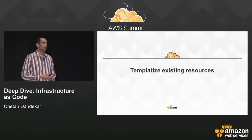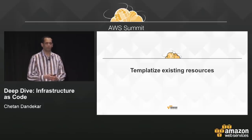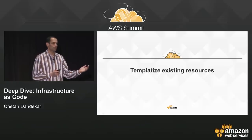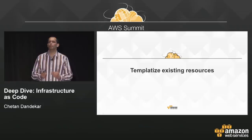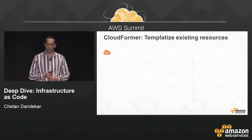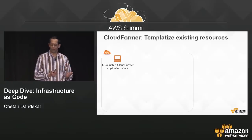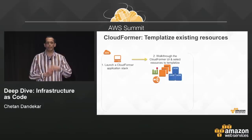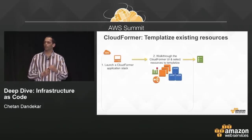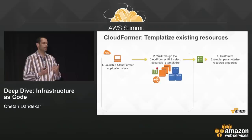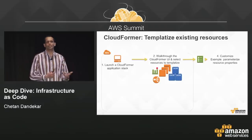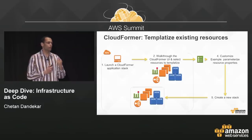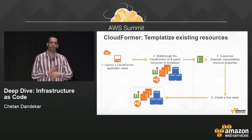If you're new to CloudFormation and already using AWS through the console or CLI, you don't have to start from a blank slate. You can templatize your existing resources using a tool called CloudFormer. It's a beta tool you stand up as a web application in your account; it walks you through your existing resources, you select what you want to templatize, and it outputs a base template. You'll need to do some post-processing — for example, parameterizing the AMI ID — and then you can replicate that existing architecture in any account or region.